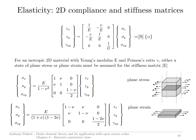For a 2D material we have the same sort of relationships. This is strain against stress, and this is our compliance matrix. Inverting that gives you the stiffness matrix, shown here as the relationship for stress against strain. These are our stiffness matrices for two cases: if we have plane stress it's the one in the center, and if it's plane strain then the stiffness matrix is defined by the relationship shown at the bottom.